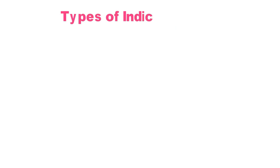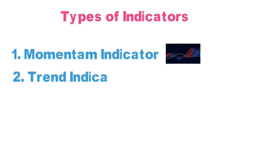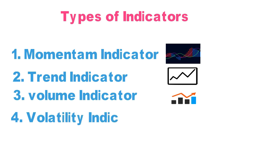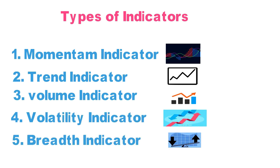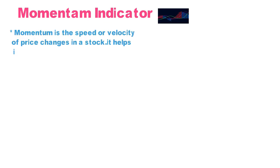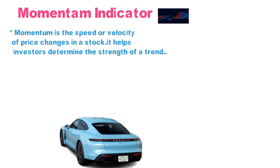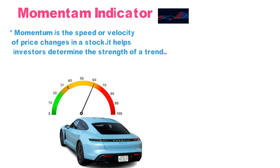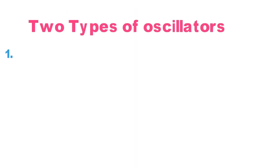There are five types of indicators: momentum indicator, trend indicator, volume indicator, volatility indicator, and breadth indicator. Momentum is equal to speed. To know a stock's speed, think of riding a car at 100 km/h — you check the speedometer. Similarly, at 60 km/h you're going medium, at 30 km/h you're going slowly. We use oscillators to check the speed of stock movement.